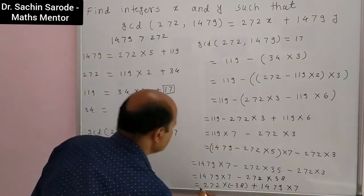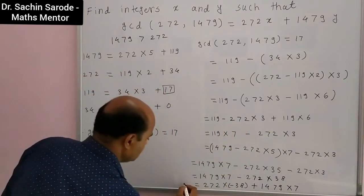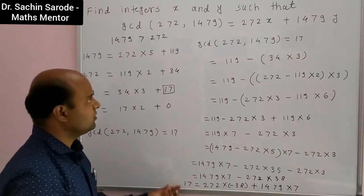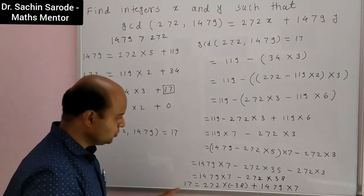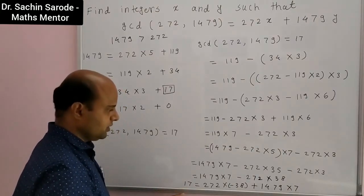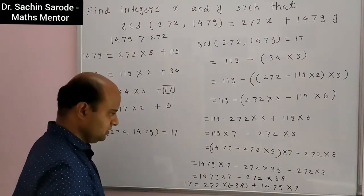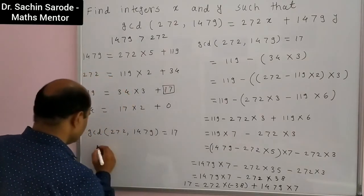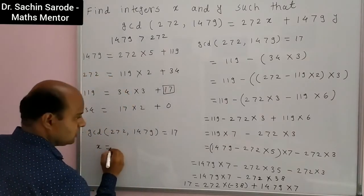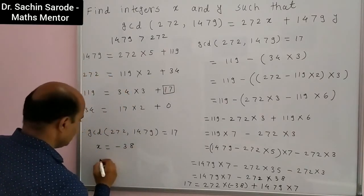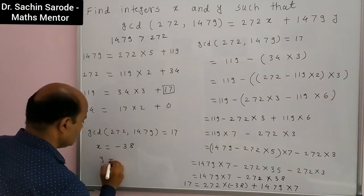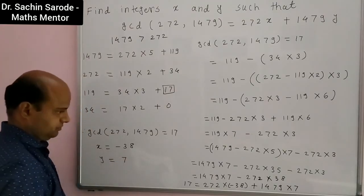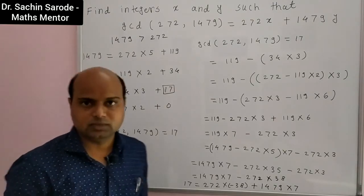This equals 17, which is GCD of 272 and 1479. So here the value of x is −38 and the value of y is 7. Thank you.